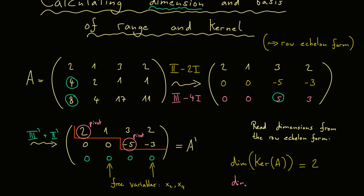Now the only thing missing is the dimension of our range, or the image of matrix A. If you remember an important theorem — the rank-nullity theorem — it tells you that if you add up the dimension of the kernel and the dimension of the range, you get the number of columns of the matrix. Therefore we can immediately read the dimension of the range from the row echelon form: it's the number of pivots. Hence, in this case, also 2.